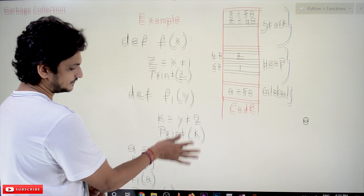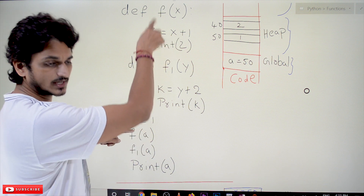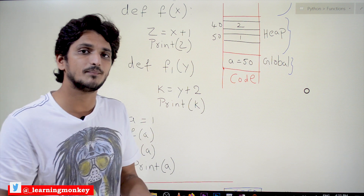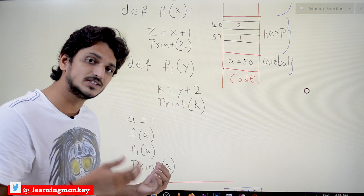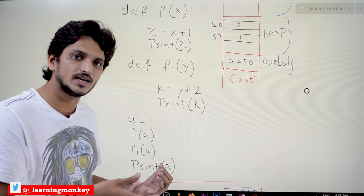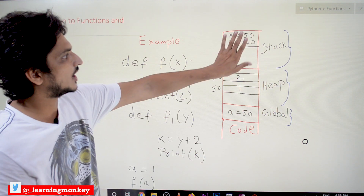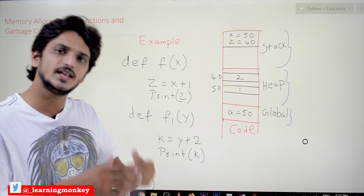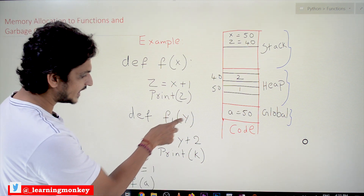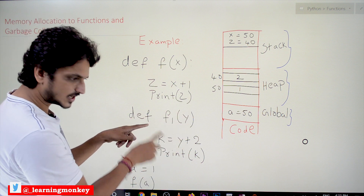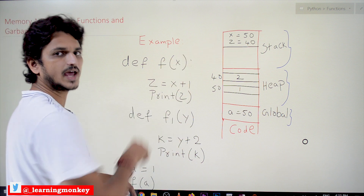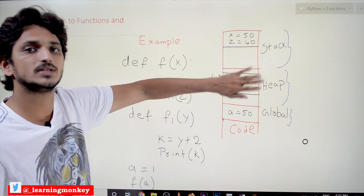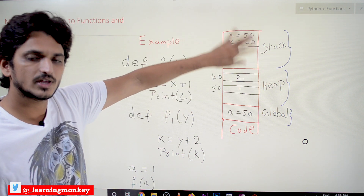This line of code has completed and the function has executed. Next, f1(a) calls a new function. Whenever a function is called, new space is assigned in the stack for executing that function. The stack is empty because f has already completed. In this stack space, it assigns space for saving the y and k variables. This function starts executing, gets the variables from the local stack space, executes, and after completion the space is removed from the stack.